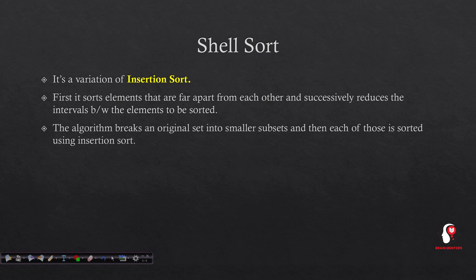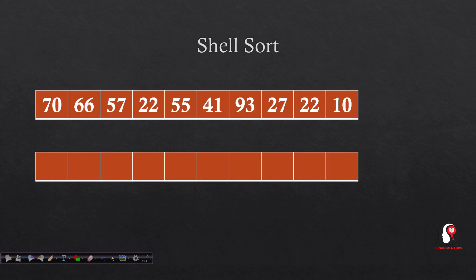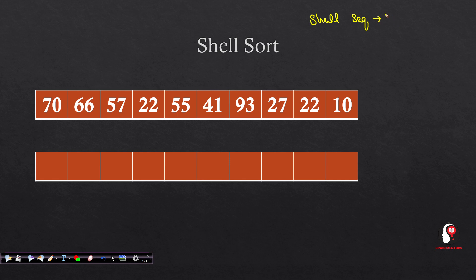The algorithm breaks an original set into smaller subsets, and each of those is sorted using insertion sort. Shell sort has a shell sequence - if you have an array, the gap starts at n/2. Then the gap is reduced to n/4, and so on.